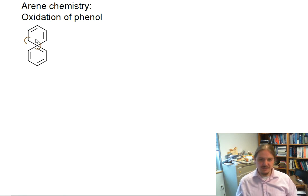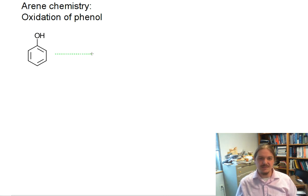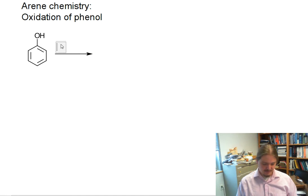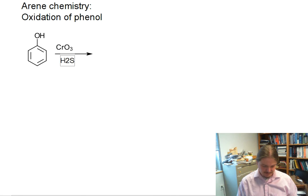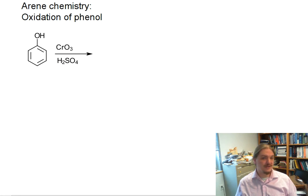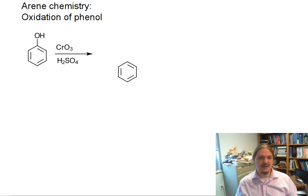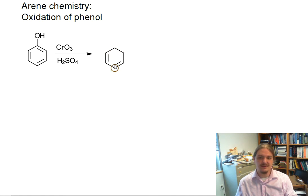It turns out that despite being aromatic, phenol is surprisingly easy to oxidize, certainly under similar types of conditions to primary and secondary alcohols. In fact, the chromic acid or Jones oxidation conditions are quite capable of oxidizing phenols, but you might be surprised at the structure of the product.